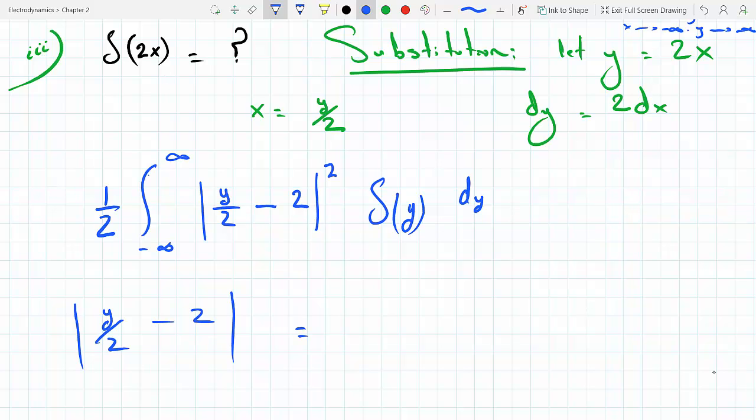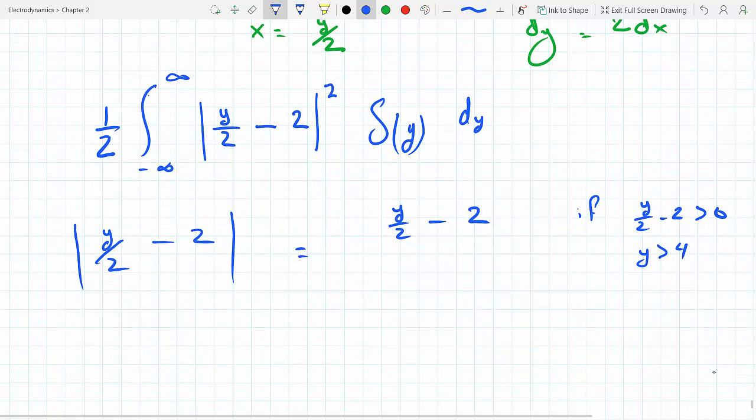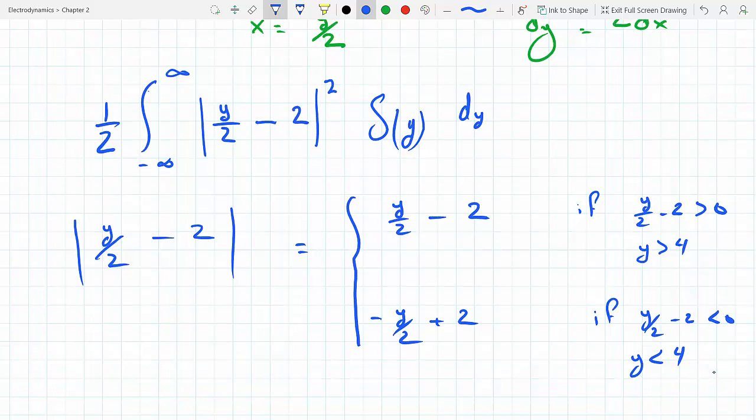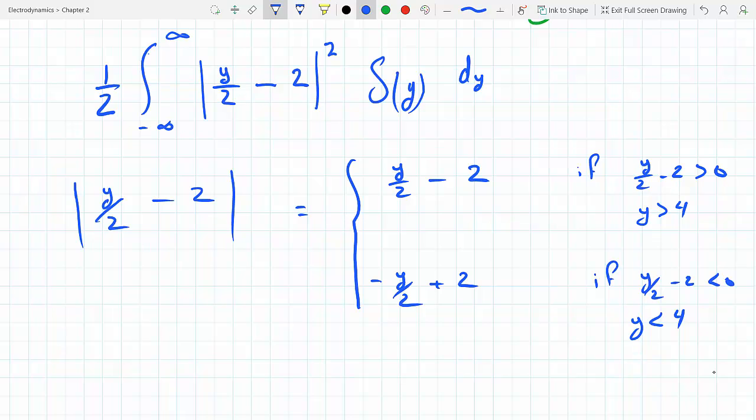...equal y over 2 minus 2 if y over 2 minus 2 is greater than 0, which makes y greater than 4. But this equals negative y over 2 plus 2 if y over 2 minus 2 is less than 0, which makes y less than 4. So you have to split the integral at 4 because to the left of 4 the function is different than to the right of 4.